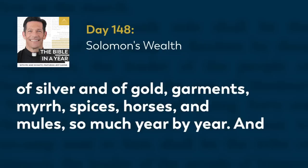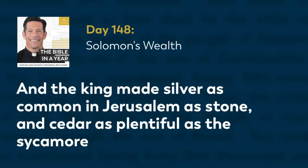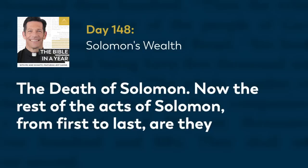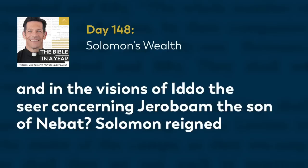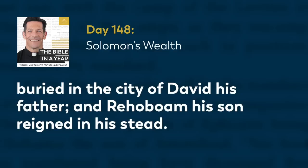And Solomon had four thousand stalls for horses and chariots, and twelve thousand horsemen whom he stationed in the chariot cities and with the king in Jerusalem. He ruled over all the kings from the Euphrates to the land of the Philistines and to the border of Egypt. The king made silver as common in Jerusalem as stone, and cedar as plentiful as the sycamore of the Shephelah. And horses were imported for Solomon from Egypt and from all the lands. Now the rest of the acts of Solomon, from first to last, are they not written in the history of Nathan the prophet, and in the prophecy of Ahijah the Shilonite, and in the visions of Iddo the seer concerning Jeroboam the son of Nebat? Solomon reigned in Jerusalem over all Israel forty years. And Solomon slept with his fathers, and was buried in the city of David his father, and Rehoboam his son reigned in his stead.